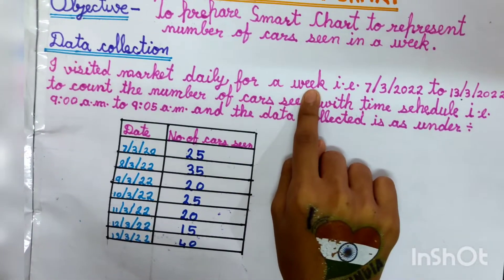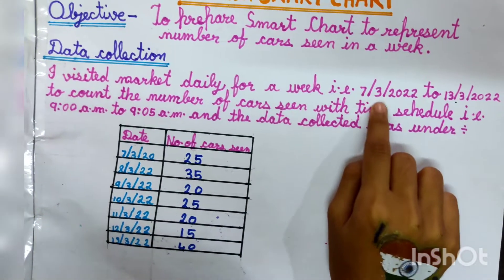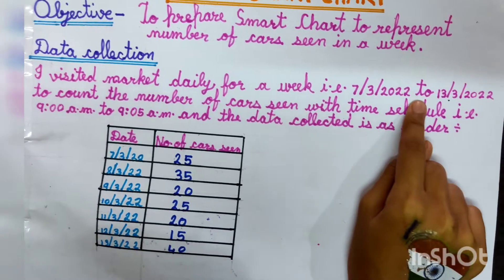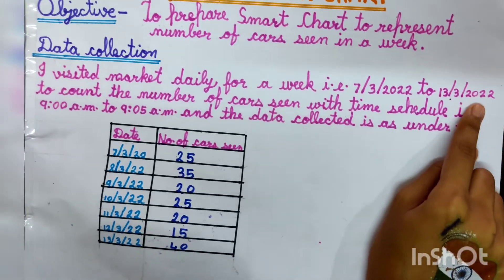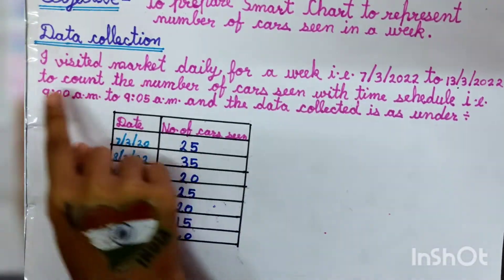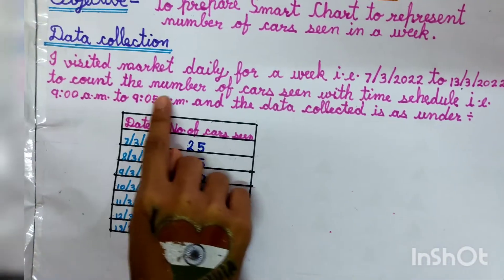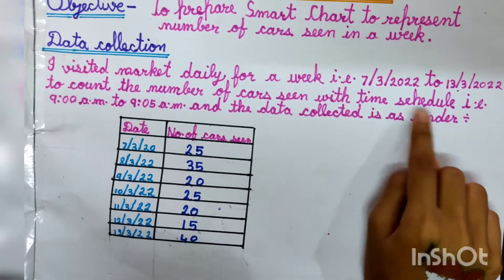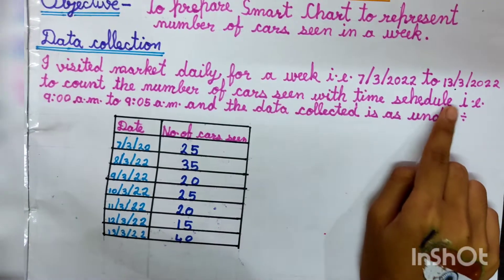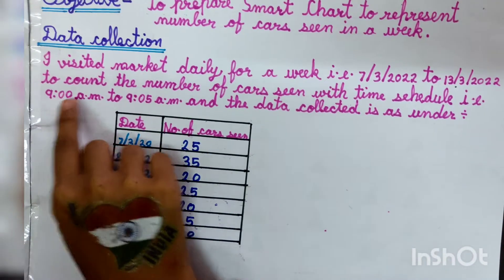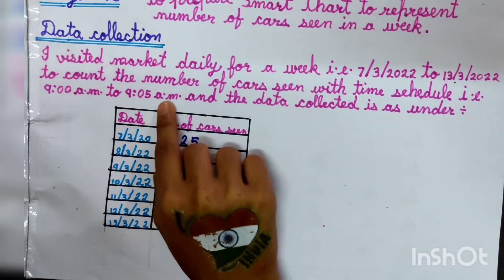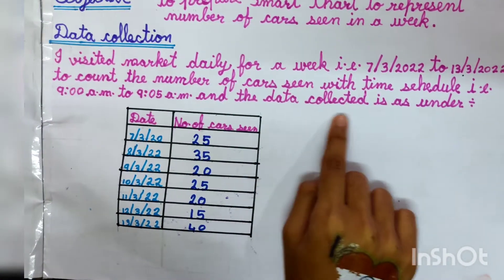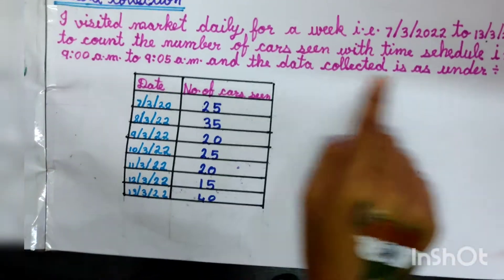For data collection, I visited the market daily for a week — from 7 March 2022 to 13 March 2022 — to count the number of cars seen within a time schedule of 9:00 a.m. to 9:05 a.m. The data collected is as follows.